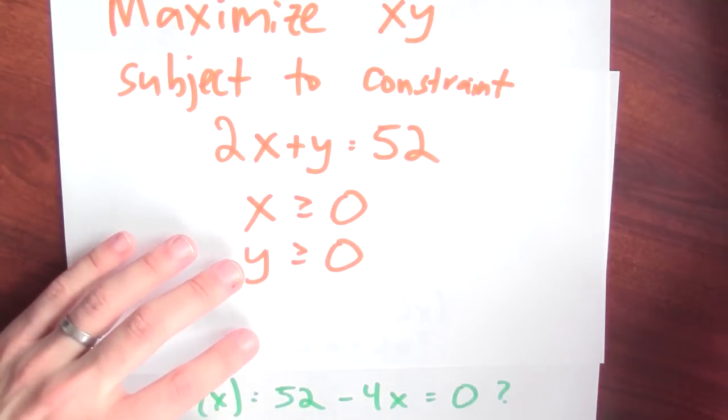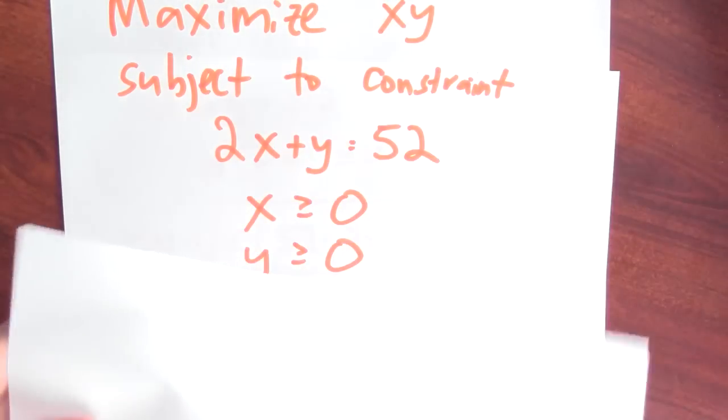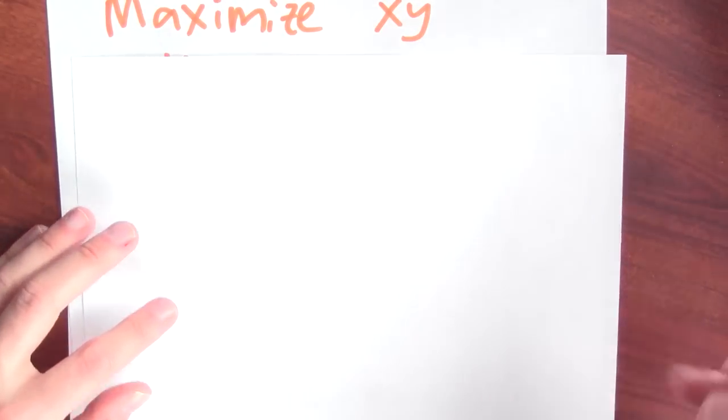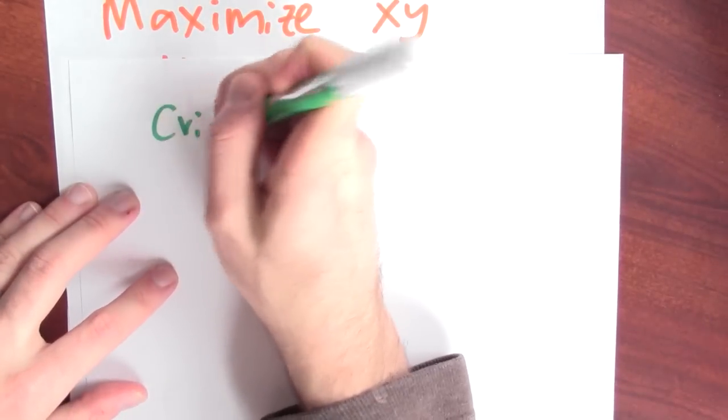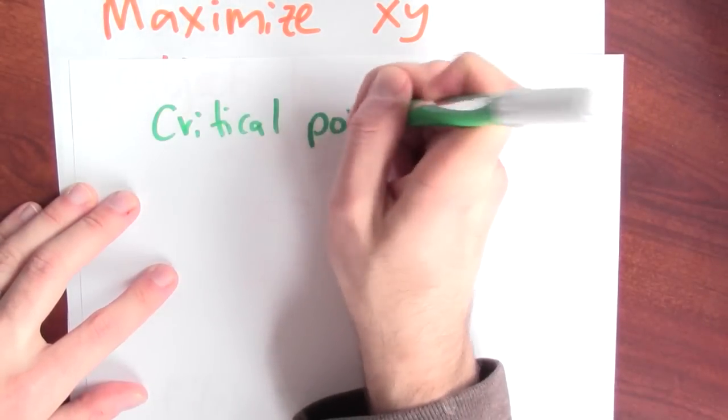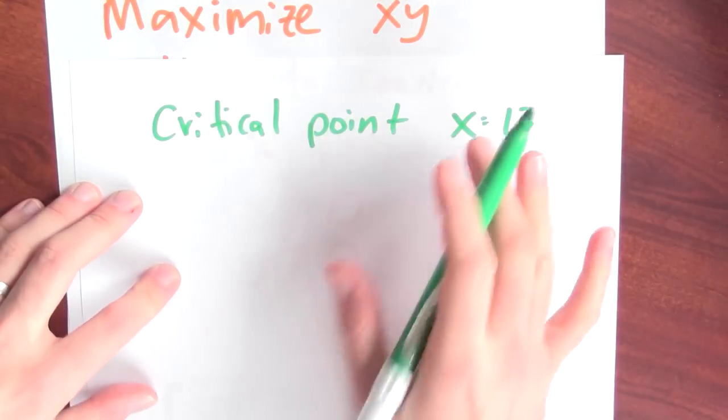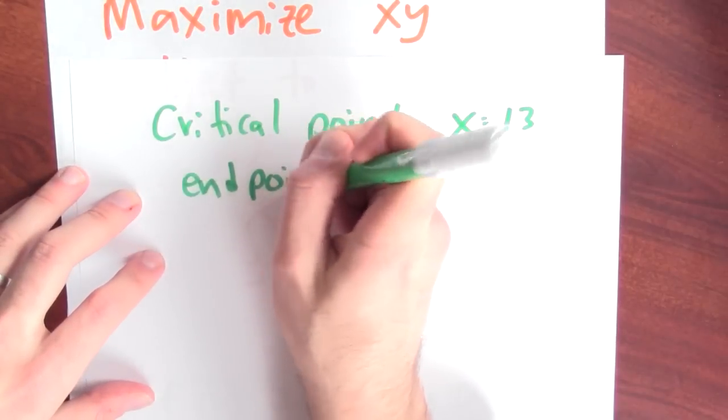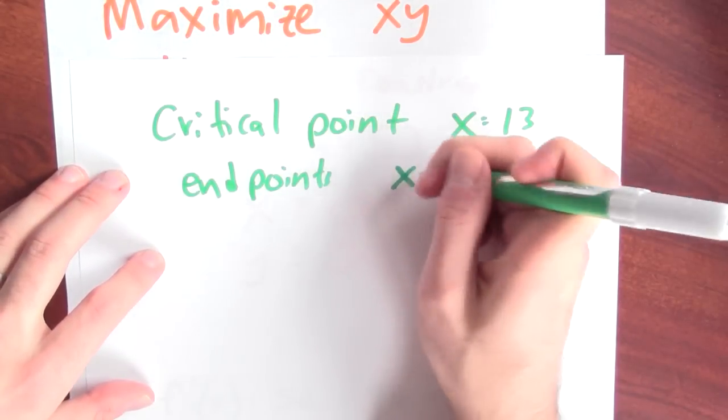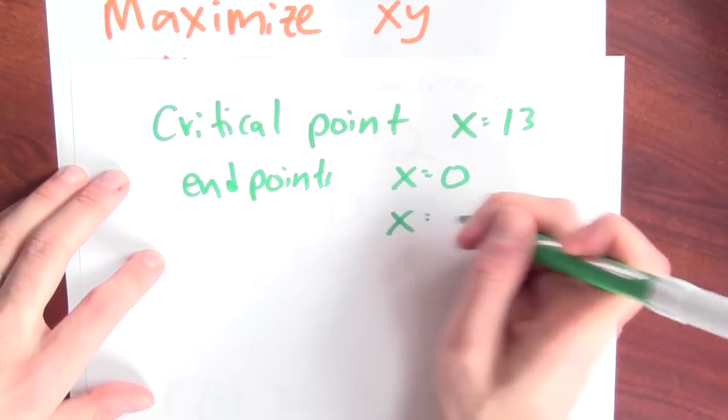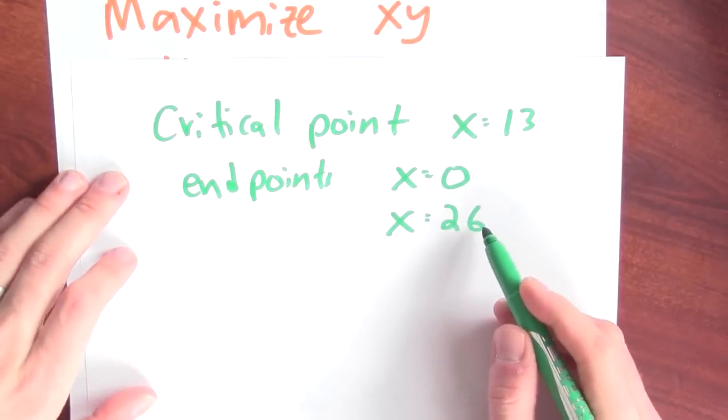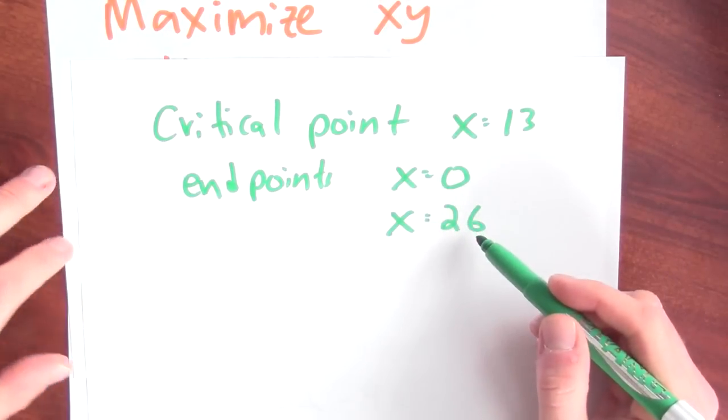So what's the situation here? Well, I can summarize it. My critical points. Well, there's really only one critical point. The critical point is when x is equal to 13. But then I've also got some end points. The end points to consider are when x is equal to 0 or when x is equal to 26. So these are the three points to check.